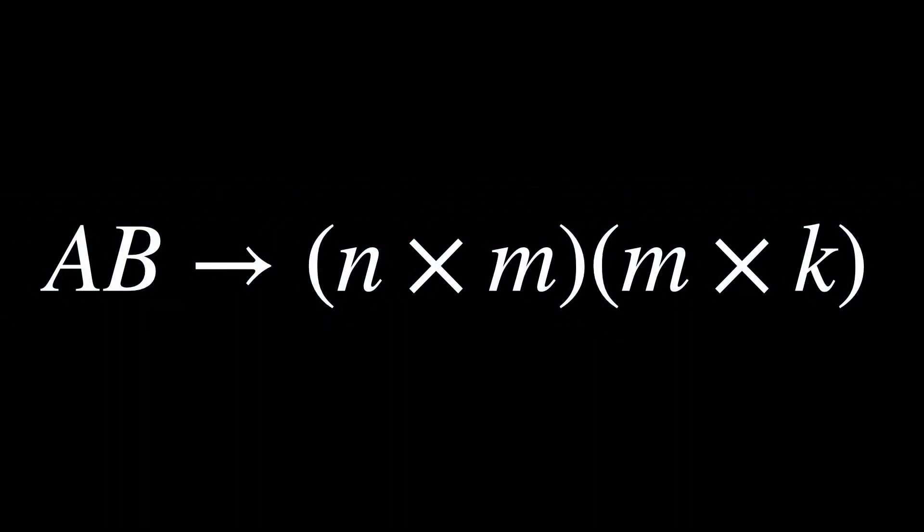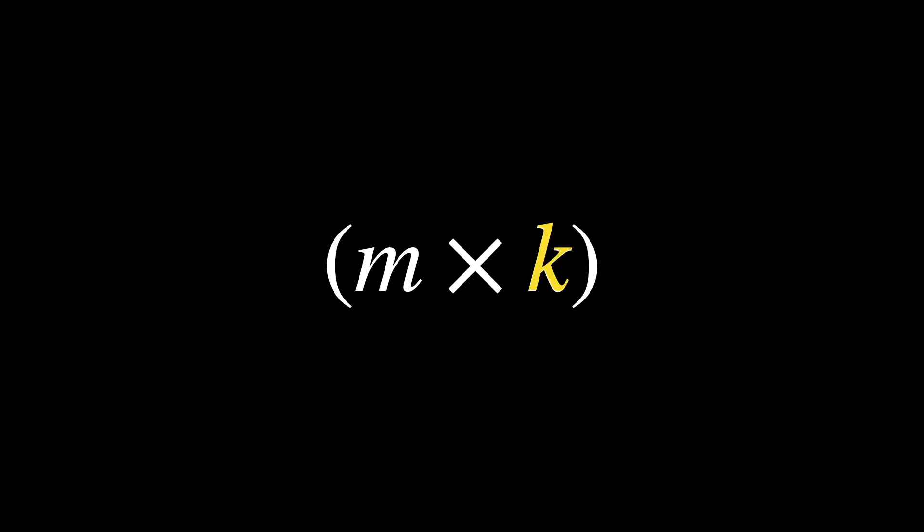Let's say we were multiplying an n by m matrix by a m by k matrix. We notice we are starting in a k-dimensional space with our m by k matrix. Then, we are mapping to an m-dimensional space. This is our first linear transformation.